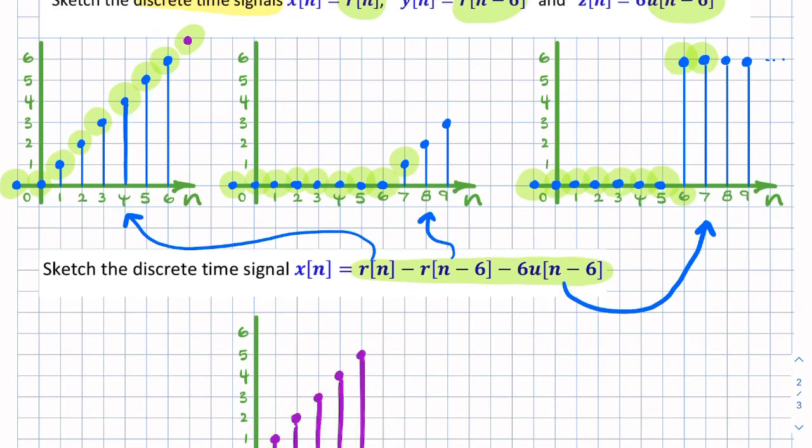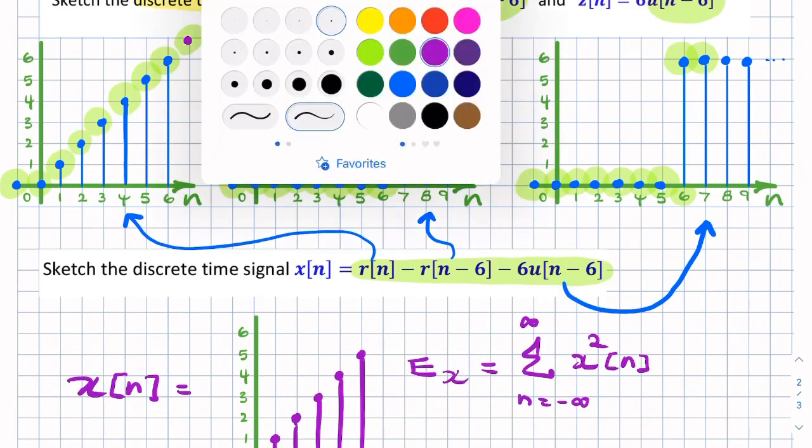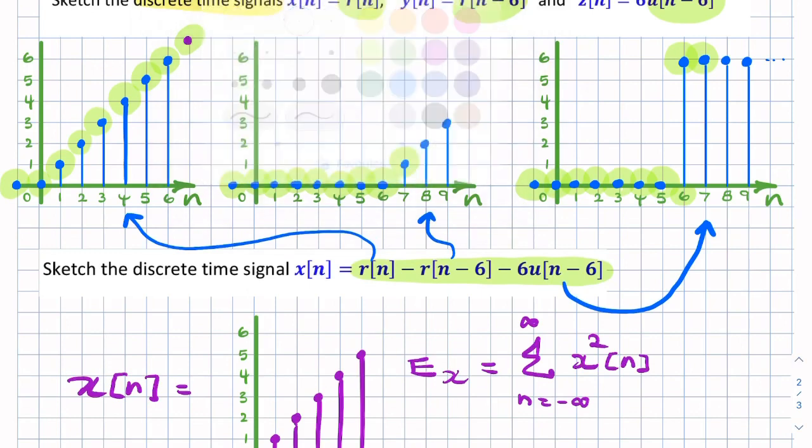And we can find the energy of this signal. So if we call this x(n), then we can find energy of x by simply adding n equals minus infinity to infinity x(n) squared. So in this case, what are we adding? We're adding zero squared plus one squared plus two squared plus three squared plus four squared plus five squared. So we're just adding these values squared. So that's the total energy for this signal. So that's the final answer.